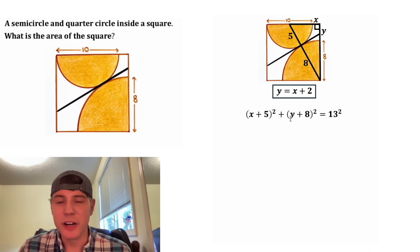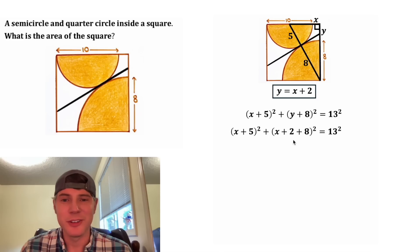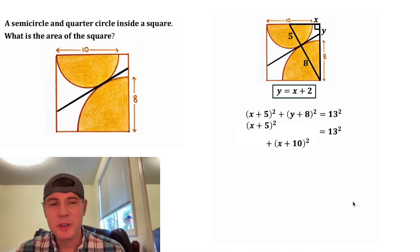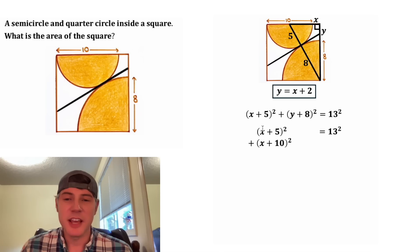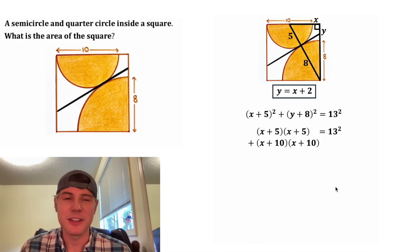Right now we have two variables, but in the place of this y, we can plug in x plus 2. 2 plus 8 is equal to 10, so now we have x plus 5 squared plus x plus 10 squared. x plus 5 squared means the same thing as x plus 5 times x plus 5, and x plus 10 squared is the same thing as x plus 10 times x plus 10.